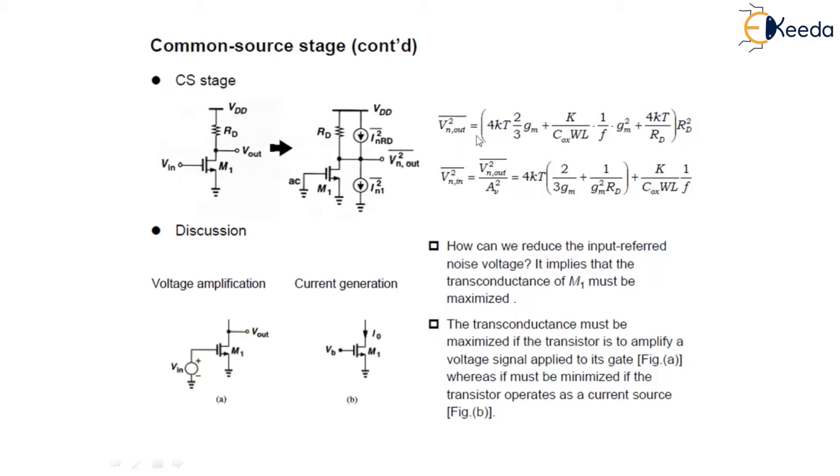So we have to write the output noise voltage, this is simply the thermal noise current of transistor M1 which is expressed as a voltage in series with the gate.